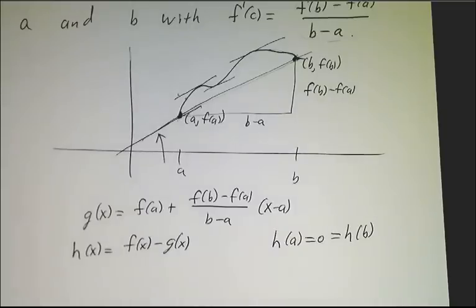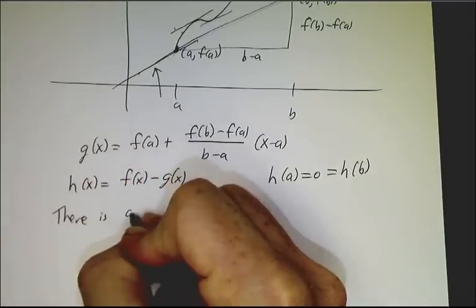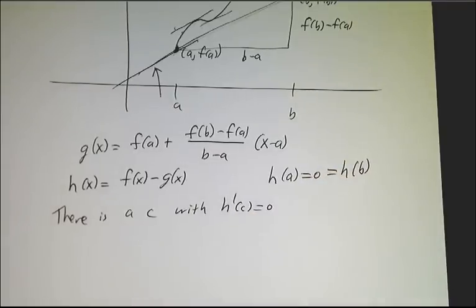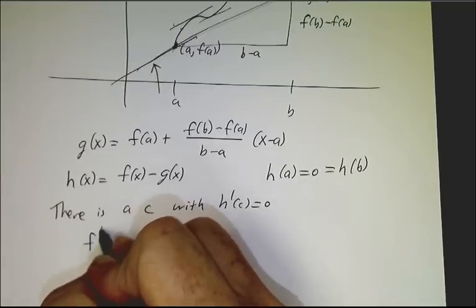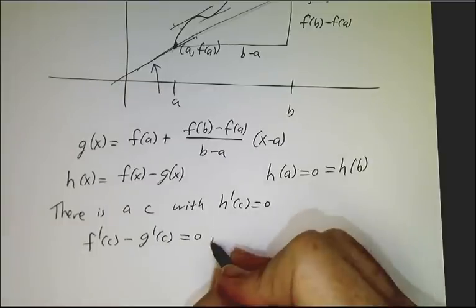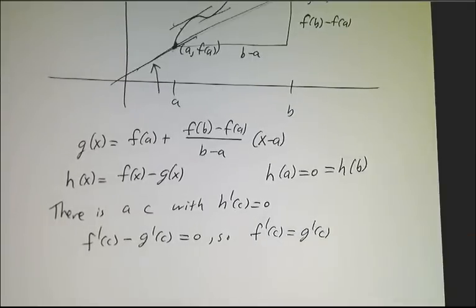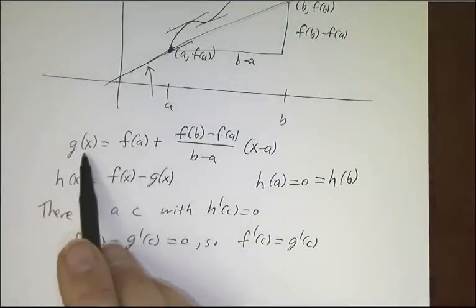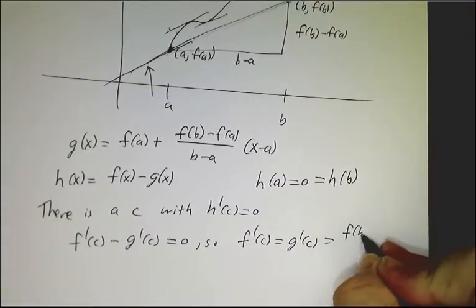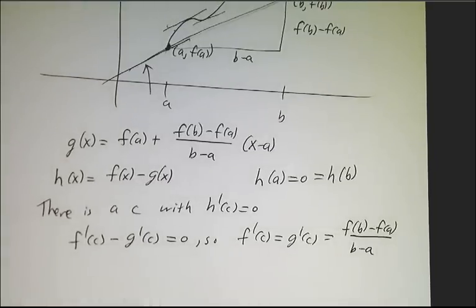So now we can bring in our old friend, Rolle's theorem. Rolle's theorem says there is a c with h'(c) equals 0. So that means that f'(c) minus g'(c) has got to be 0, which means that f'(c) is g'(c). And g'(c), you can see g is just a constant plus another constant times x. The derivative of g is [f(b) minus f(a)] over [b minus a]. So that's the proof of the mean value theorem.